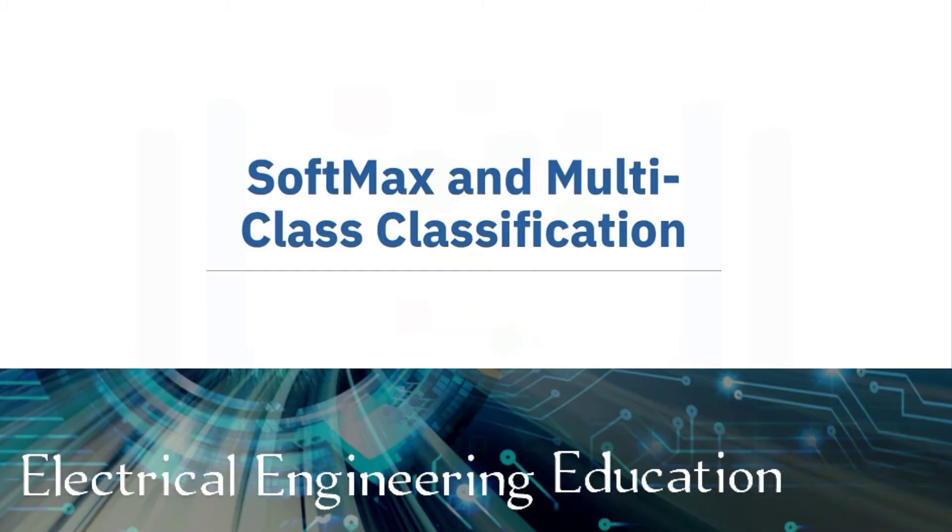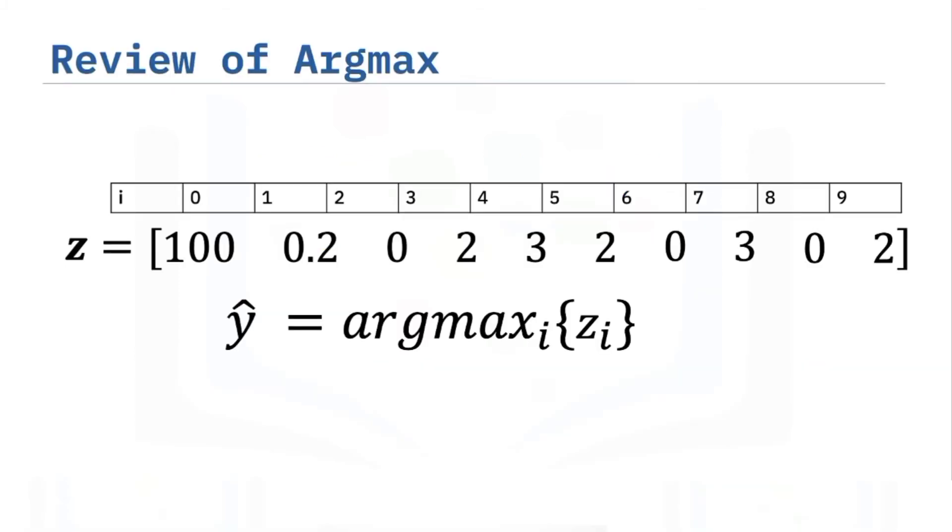We will discuss softmax and multi-class classification. Before we continue let's review the argmax function. The argmax function returns the index corresponding to the largest value in a sequence of numbers. Here the largest value in z is 100 and the corresponding index is 0. Thus the argmax function will return 0.